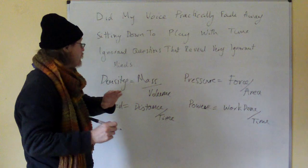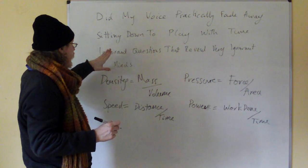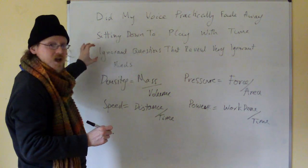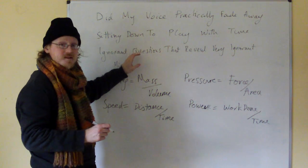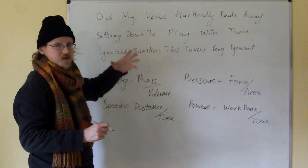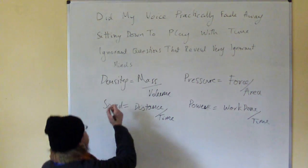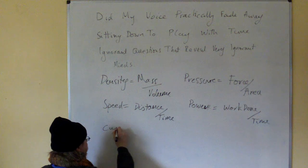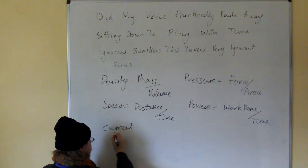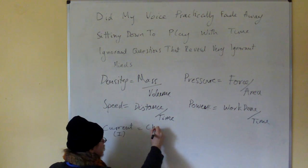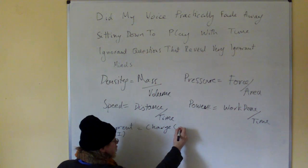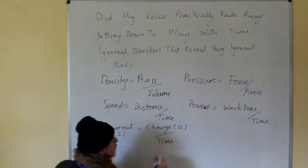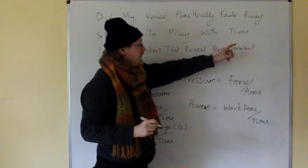'Ignorant questions that' — now, this one's a bit tricky because I stands for current, so we write current, but I is the symbol. And Q is the symbol for charge, though charge is spelled with a C. So, it's 'ignorant questions that' — current I equals charge Q over time.